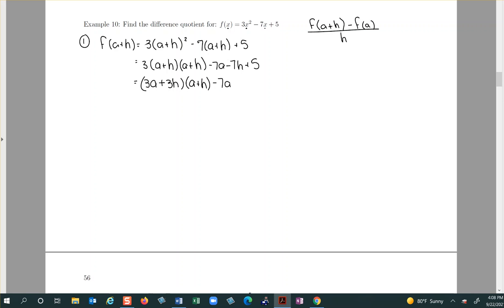Minus seven a minus seven h plus five, and then FOIL. So three a squared plus three a h plus another three a h. The middle terms here will add up.